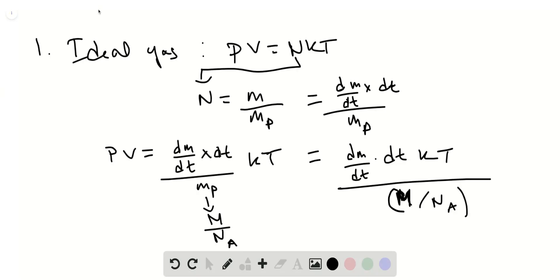So that's the ideal gas equation, so we can make this dm/dt part the subject. That's what we're after. So what this becomes is that dm/dt, mass flow rate times the time interval, is equal to PV times m over nA Avogadro's number KT.